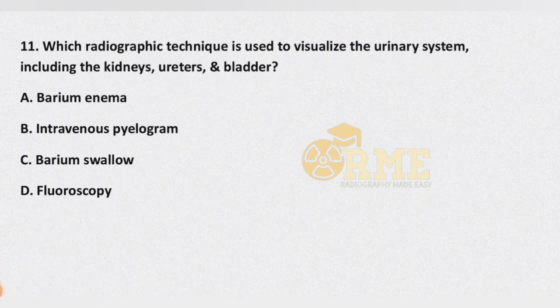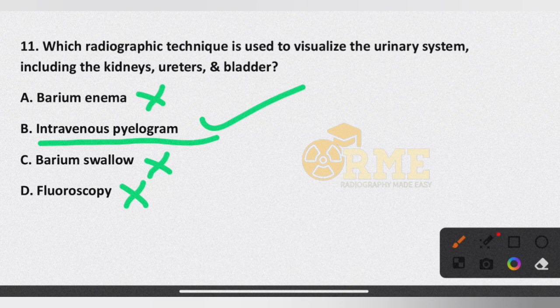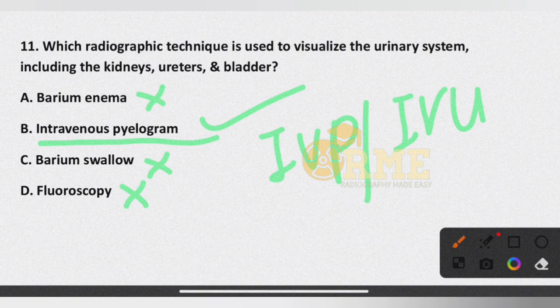Question number 11: which radiographic technique is used to visualize the urinary system including the kidneys, ureters, and bladder? Note that barium enema is the investigation of the gastrointestinal tract. The correct answer is intravenous pyelogram IVP, also called IVU or excretion urography.